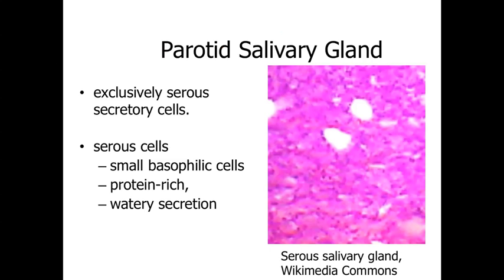Starting out within the oral cavity, we're going to have the salivary glands. The first of these we'll talk about is the parotid salivary gland. The parotid salivary gland is going to be exclusively sero-secreting cells, and so this is going to be a protein-rich, watery secretion. These serous cells are going to have that characteristic of basal basophilia.